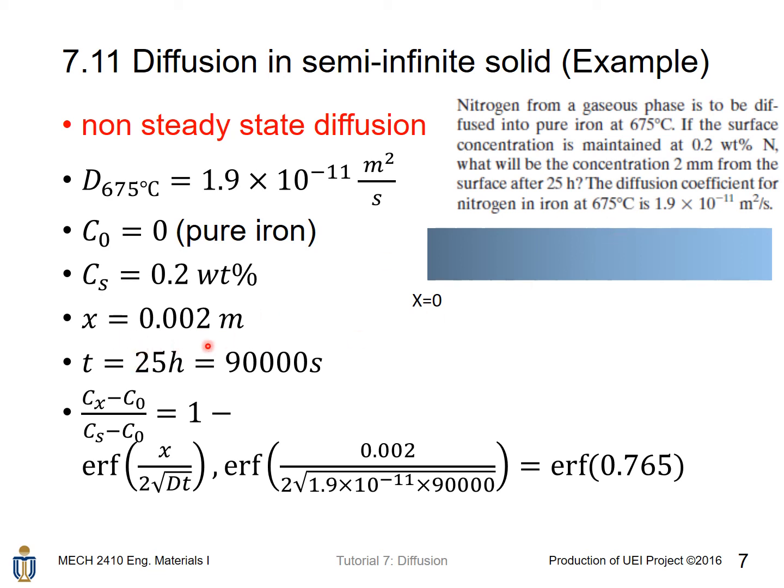x is equal to 0.002 meters, as we want to find the concentration 2 mm from the surface. Time is 25 hours, as we want to find what is the concentration 2 mm from the surface after 25 hours. Convert the 25 hours to seconds, we get 90,000 seconds. Using the equation given, first we find the error function value. 0.002 over 2 times square root Dt, D is the diffusion constant or diffusivity, t is the time, and we get erf equal to this value.